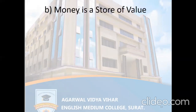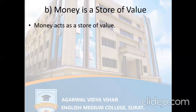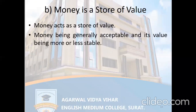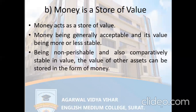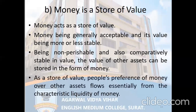Money acts as a store of value — the value of anything can be stored in terms of money. Any commodity can be converted into money and its value can be stored. Money is generally acceptable and its value is more or less stable. Being non-perishable and comparatively stable in value, the value of other assets can be stored in the form of money. People's preference for money over other assets flows essentially from the characteristic of liquidity — money is the most liquid asset, and anything can be converted into money or money into any other thing.